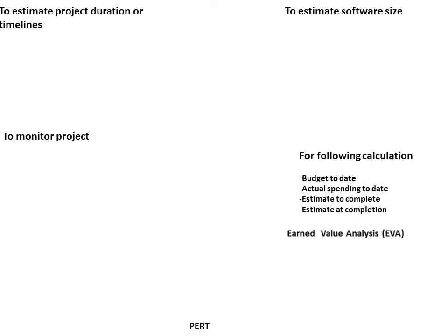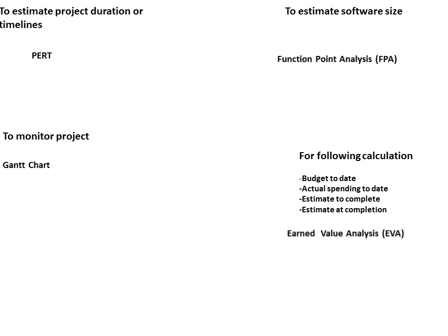PERT is used to estimate project duration or timelines. Gantt Chart is used to monitor the project. Function Point Analysis is used to estimate software size. CPM is also used to estimate project duration or timeline, but first preference is given to PERT. Similarly, SLOC is used to estimate software size, but first preference is given to Function Point Analysis.